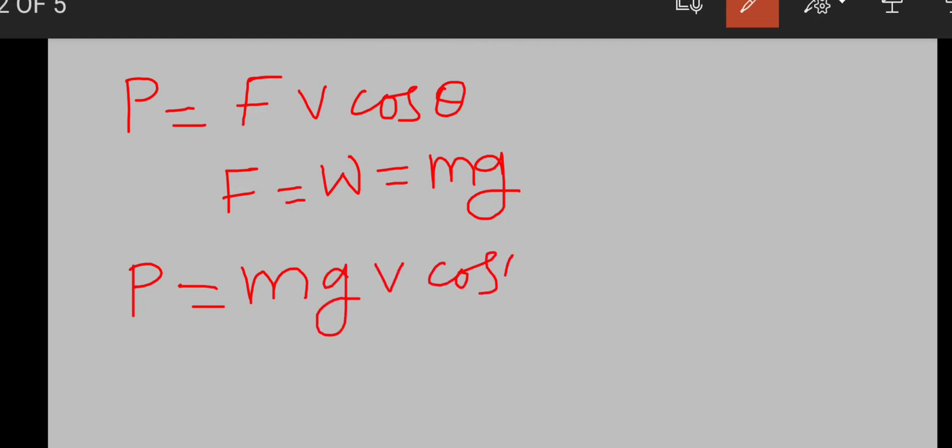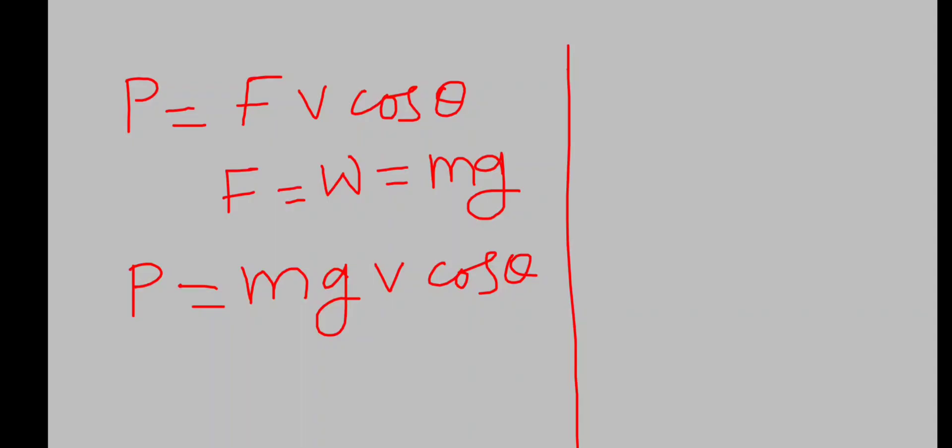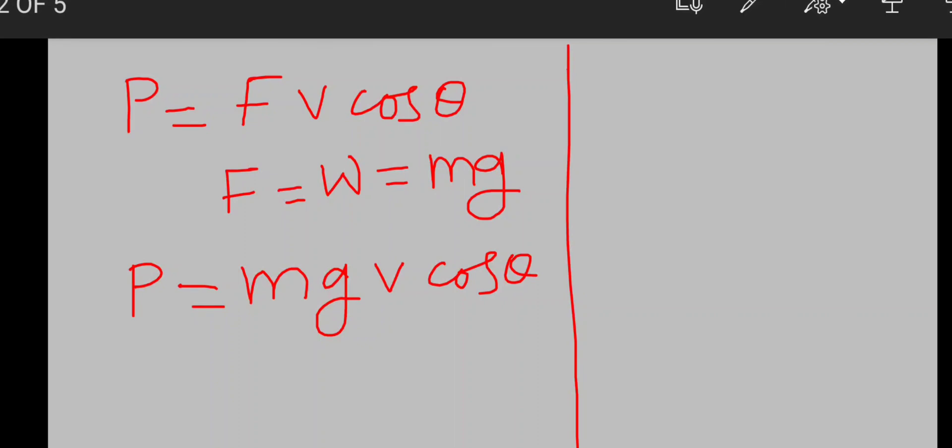V cos theta. Here M is 50 and V is 2, angle is 60. By putting the values: